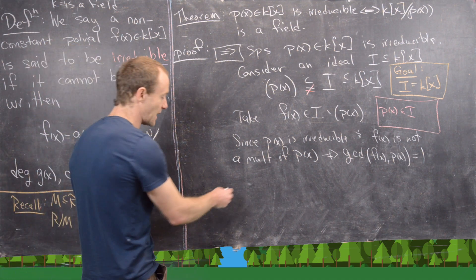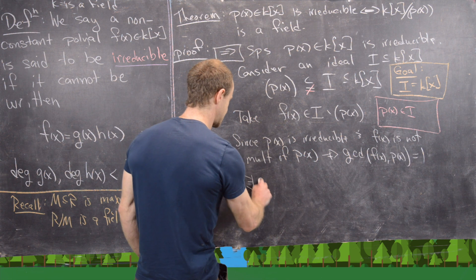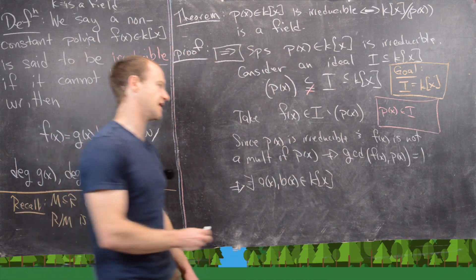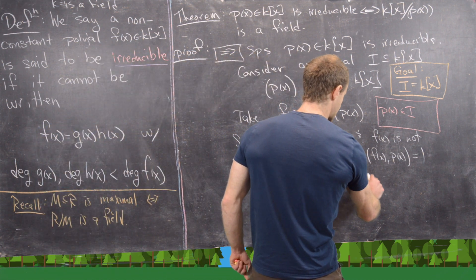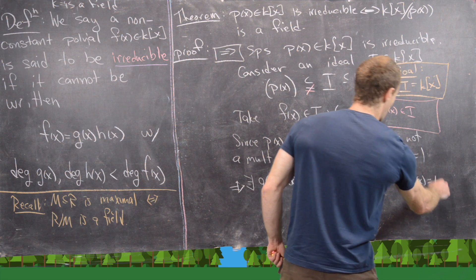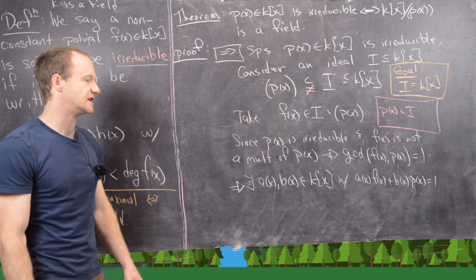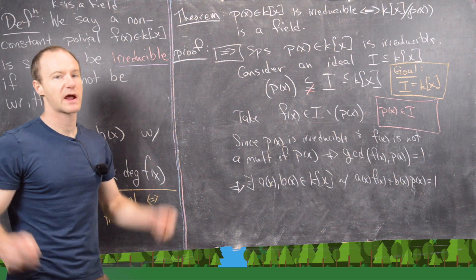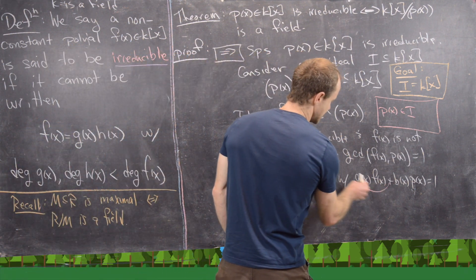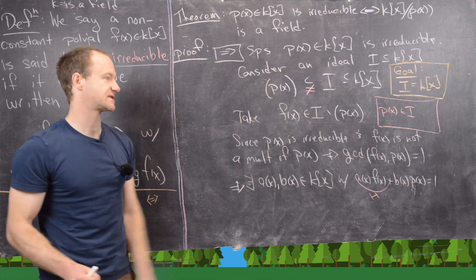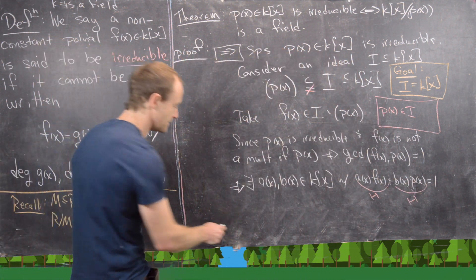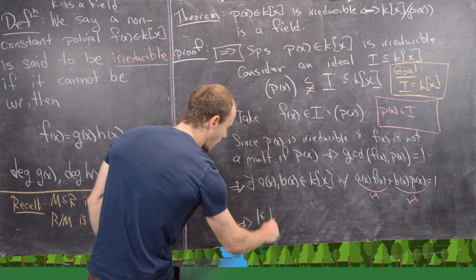These things are relatively prime. By a previous result, that means there exist two polynomials a(x) and b(x) inside k[x] with a(x)f(x) + b(x)p(x) = 1. We can always write the polynomial GCD of two polynomials as a combination of those two polynomials, paralleling what happens with integers. Notice that a(x)f(x) is inside I because f(x) is inside I, and b(x)p(x) is inside I because p(x) is inside I. So the number 1 is inside I.